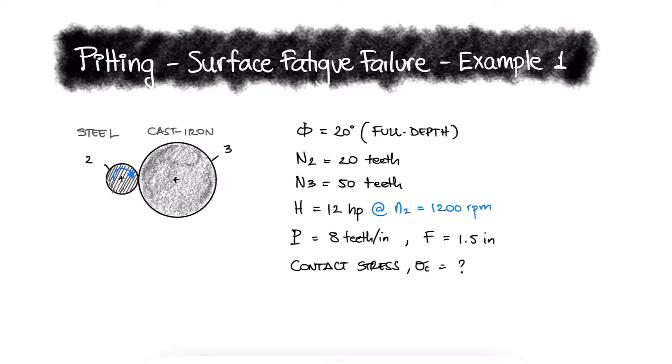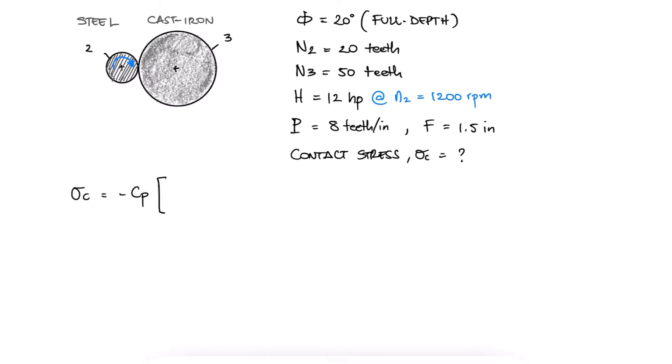This is the first example for the surface fatigue failure main video. The contact stress sigma c will depend on the elastic coefficient cp, which in turn depends on the elastic modulus and Poisson's ratio of the material of the gear and the pinion.